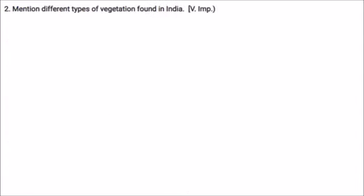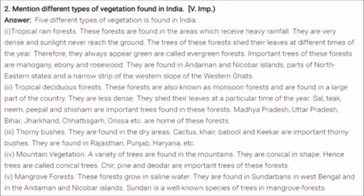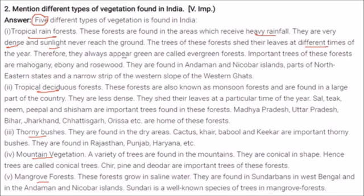There are five types of vegetation in India. Tropical rainforests are found in areas that receive heavy rainfall; they are very dense, sunlight never reaches the ground, and trees shed leaves at different times so they appear always green — called evergreen forests. Important trees are mahogany, ebony, and rosewood. They are found in the Andaman and Nicobar Islands, parts of the northeastern states, and a narrow strip of the western slope of the Western Ghats.